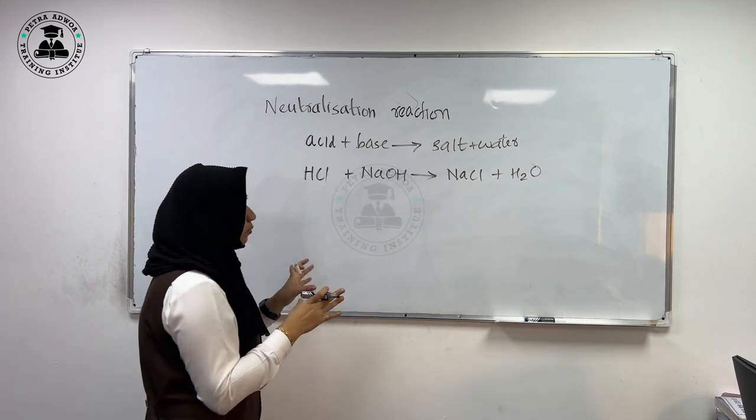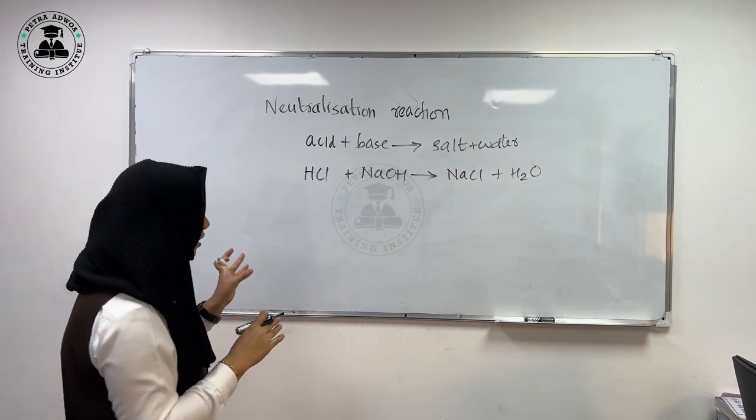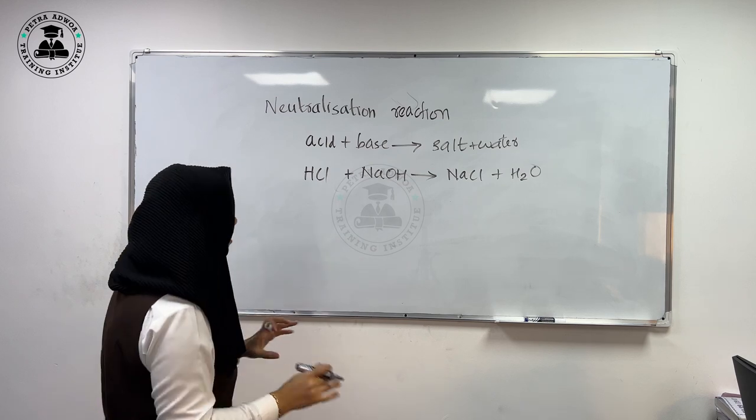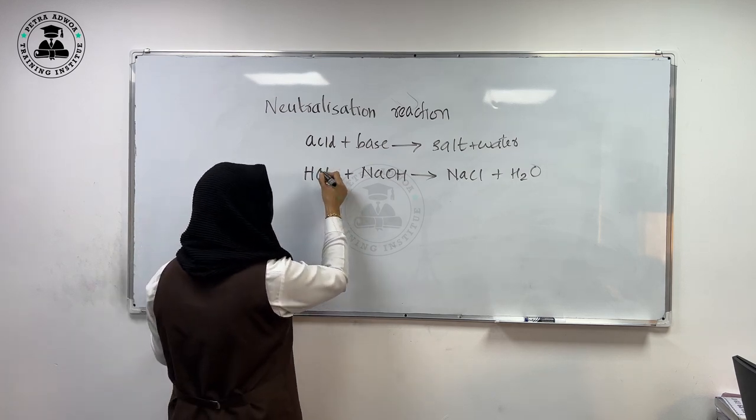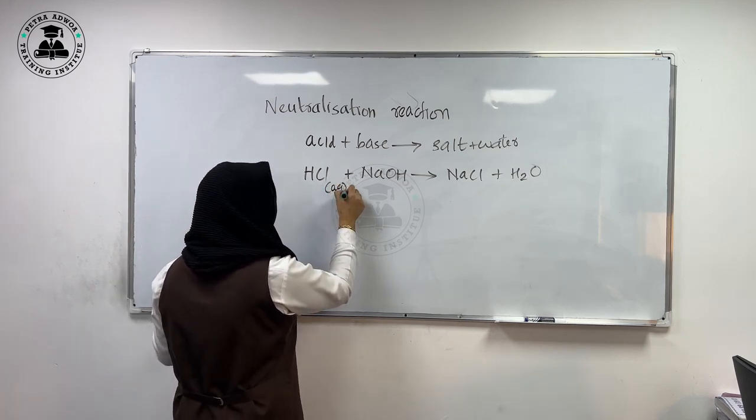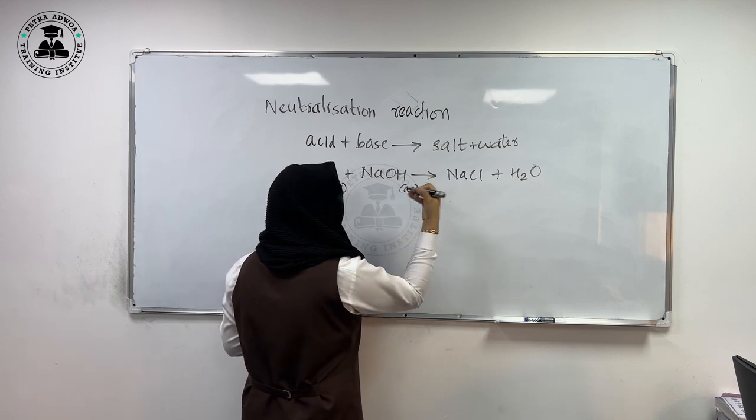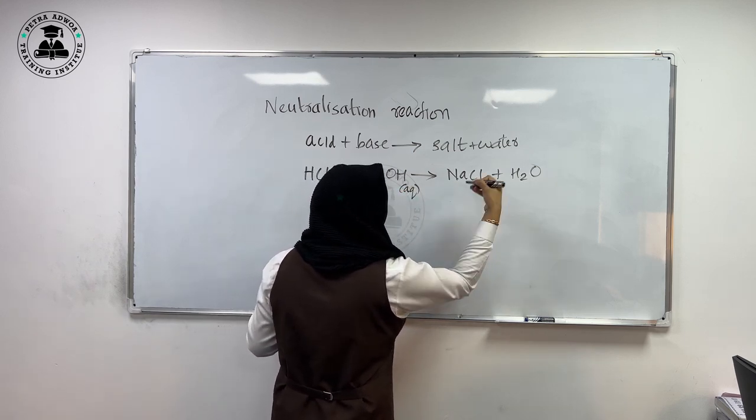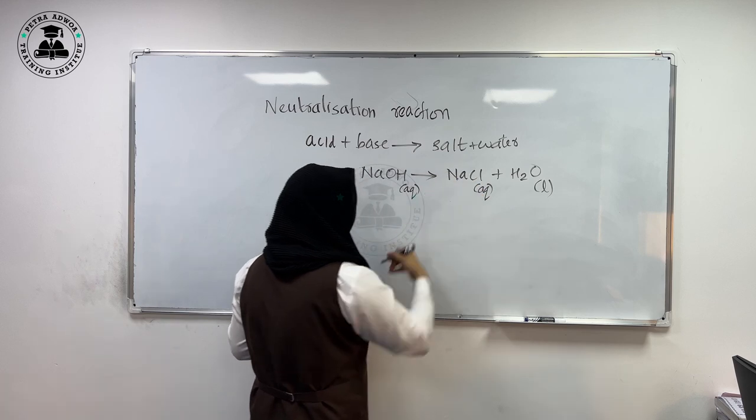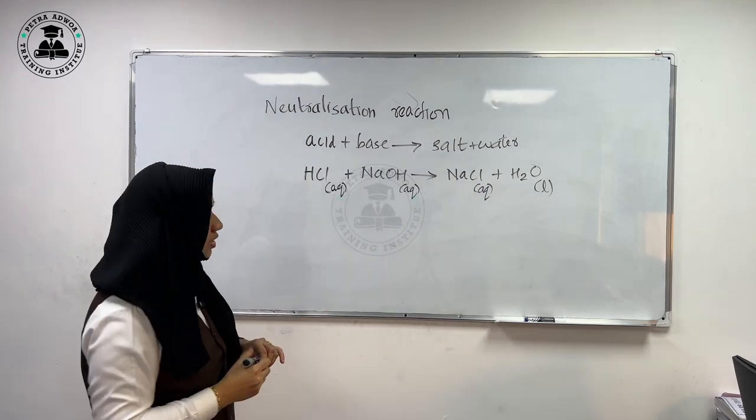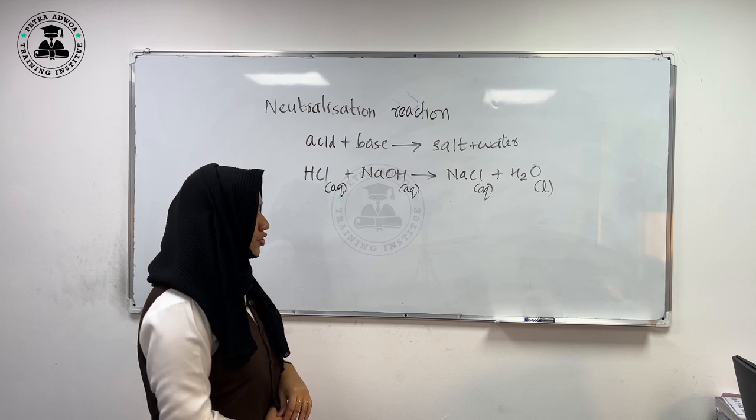We have to check whether this equation is balanced or not. I think the equation is already balanced. We have to add their state symbols. So HCl is an aqueous solution. Sodium hydroxide is also an aqueous solution. Sodium chloride is also an aqueous solution. And H2O is liquid. The state symbols are necessary when you write the balanced chemical equation.